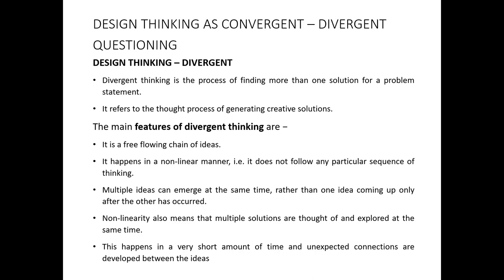Divergent thinking can be defined as the process of finding out a large number of solutions for a problem statement. It is a thought process of generating creative solutions. Usually the brainstorming process is one of the methods of generating a large number of solutions to a particular problem. It can be said that brainstorming is a process involved in divergent thinking.